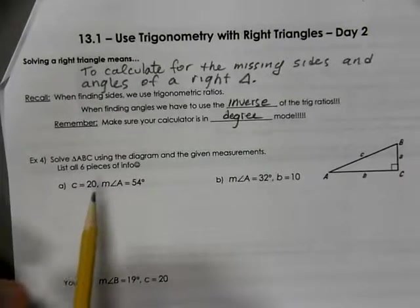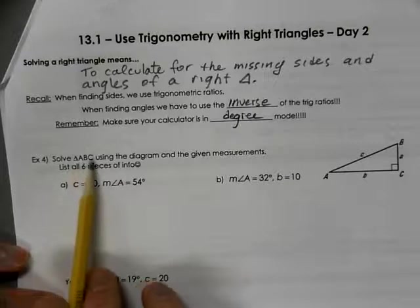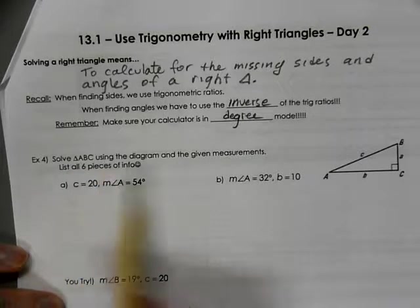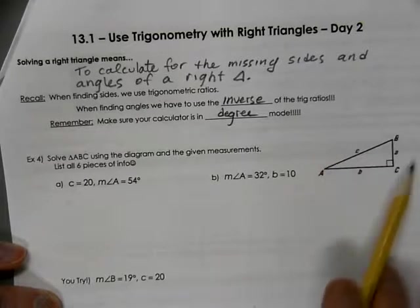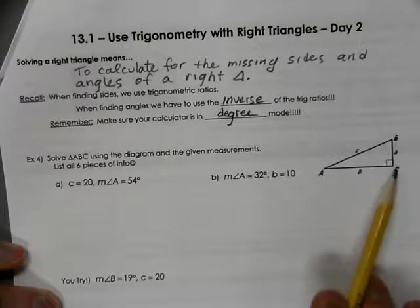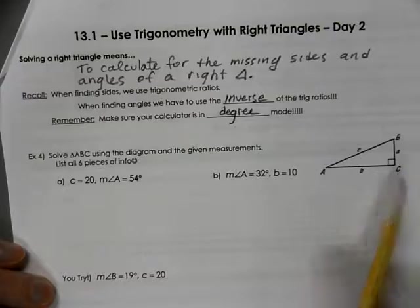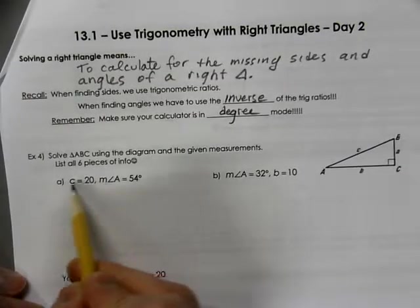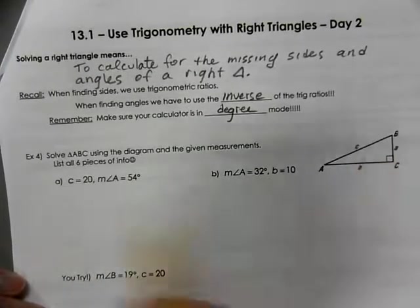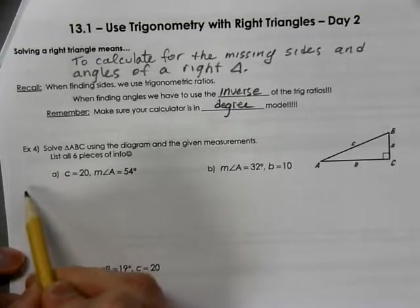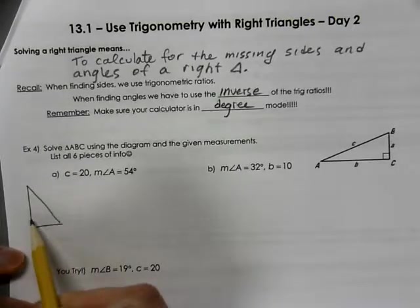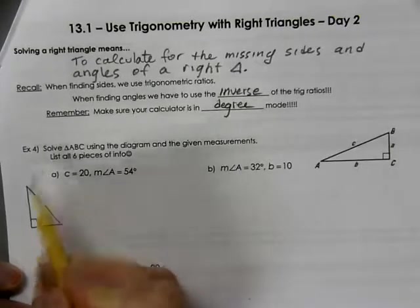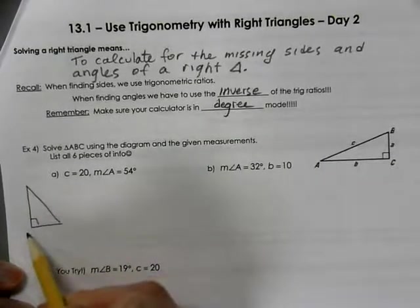So we're going to solve triangle ABC. Notice that the format of all of our triangles are going to use C as a right angle. So if C is 20, I'm going to draw a separate triangle over here. If C is our right angle for this, it's not always true, but it is for all of these three questions.